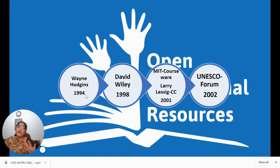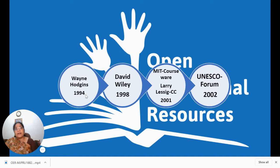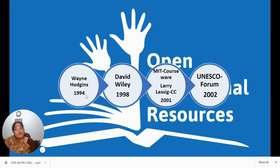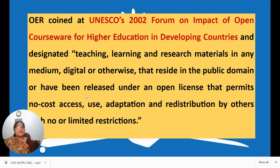In 1998, David Wiley gave the concept of open content, the open publication license, and promoted openness — and he is still one of the crusaders of open education. Then in 2001, two remarkable things happened: MIT Courseware was launched, which drew global attention from higher education institutions. Also in 2001, Larry Lessig gave one of the most robust open licenses — Creative Commons — which is the most widely used license even today. The subsequent year, UNESCO held a forum to assess the impact of OER in higher education, especially in developing countries.